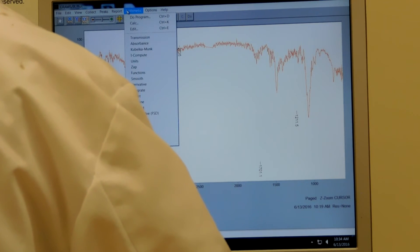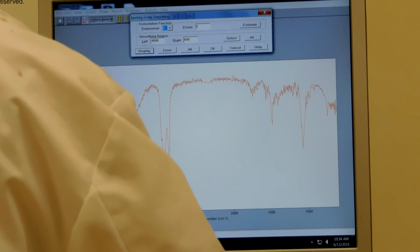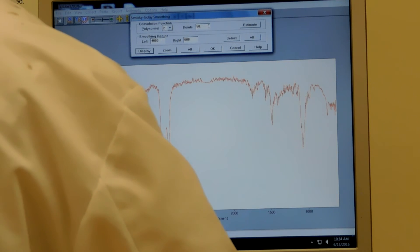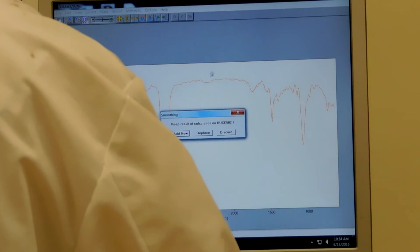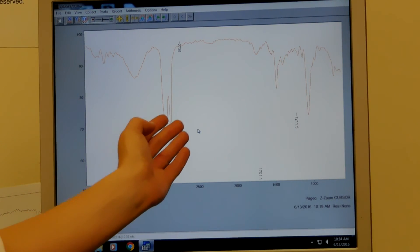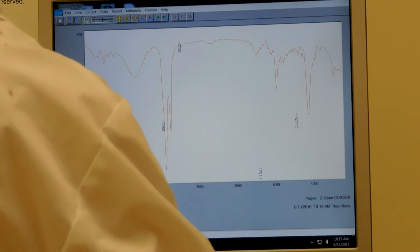First you're going to go to arithmetic, smooth, Savitzky-Golay, OK. Make sure instead of five points it says fifty and you can click OK. And again you want to replace it. After this it's going to look like what you wanted to, a very nice smooth line. So you can go to File and Print.